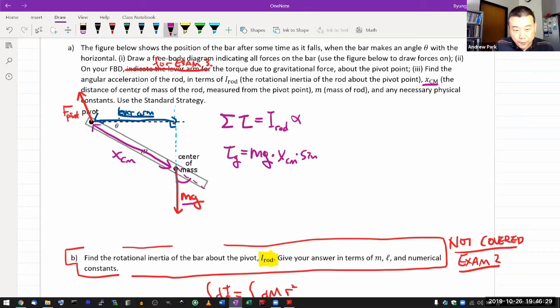And then theta should be the angle between the displacement vector and the force. Unfortunately, that's not the theta over there. Let me call this phi. So sine of phi. Now that phi is the same phi as this phi, which means that's 90 degrees minus theta. So it's a complementary angle. So sine of phi is equal to cosine of theta. So this should be mg x_cm cosine of theta is equal to the net torque.